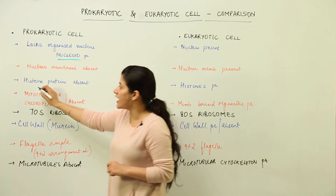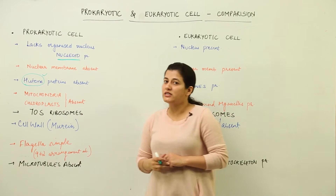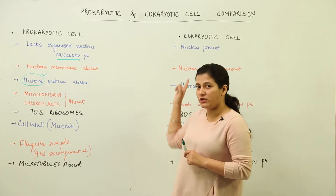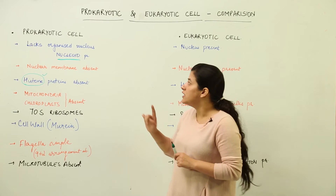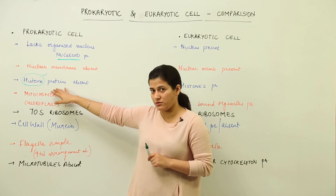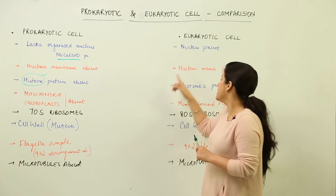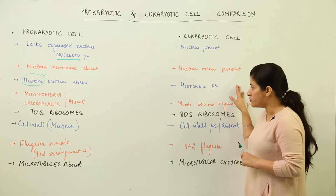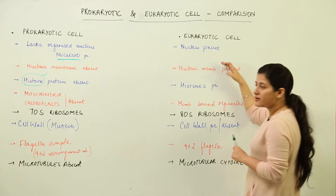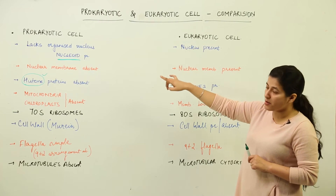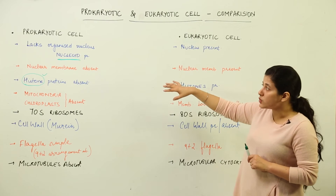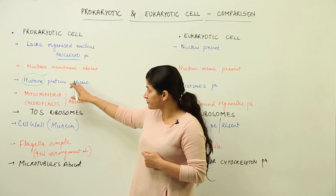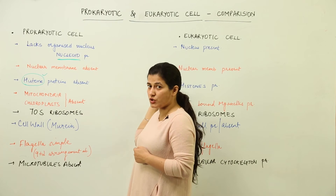Third, since the nucleoid is a simple formation, it does not have complex histone proteins. Histone proteins arrange the chromatin material — the genetic material — in a well-organized manner in the form of chromosomes. Since prokaryotic cells do not have a well-organized nucleus, they cannot have histones either. The eukaryotic cell does have well-defined histone proteins. It is observed that almost every bacterial cell has non-histone proteins in comparison.